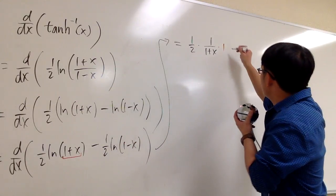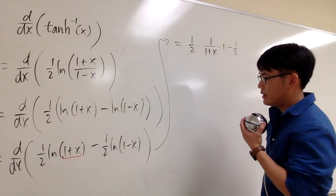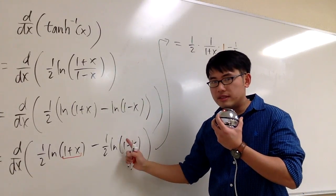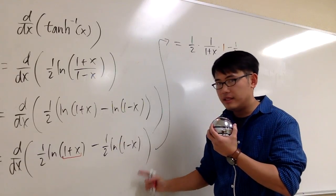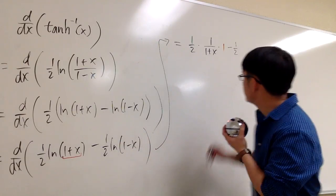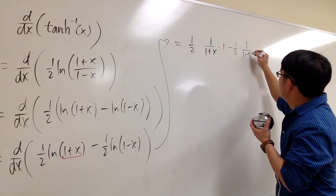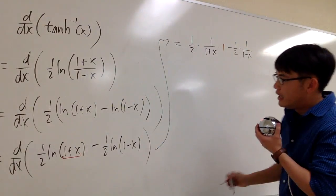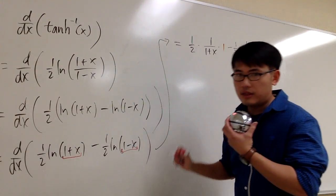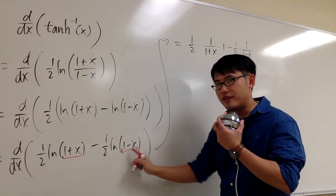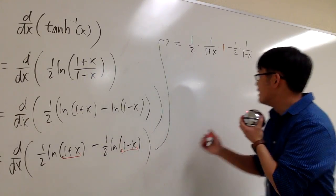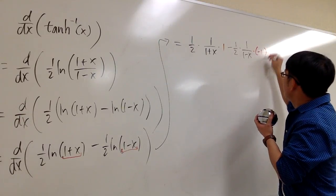We're going to subtract 1 half. So we bring down minus 1 half. And now what's the derivative of this? Derivative of ln of 1 minus x is first of all 1 over that. So 1 over 1 minus x. And now you look at it inside. The chain rule matters, because the derivative of 1 is 0. Derivative of negative x is negative 1. So you will have to multiply by negative 1.